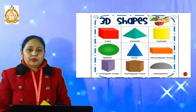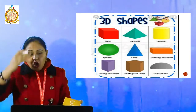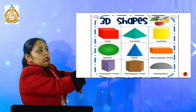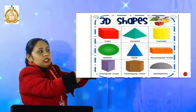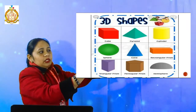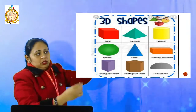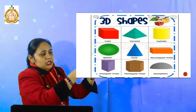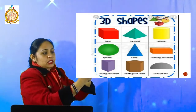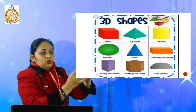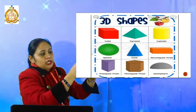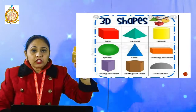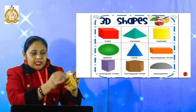Now we have to deal with edges. Edges means straight lines. How many straight lines does it have? Starting from here: one, two, three, four — then five, six, seven, eight — then nine, ten, eleven, and twelve. It means it has twelve edges. Six faces and twelve edges.